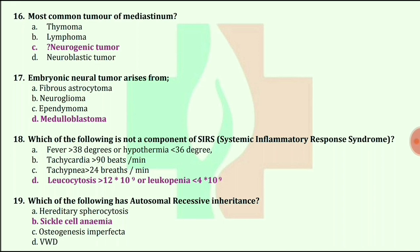Embryonic neural tumor arises from medulloblastoma. Which of the following is not a component of SIRS (systemic inflammatory response syndrome)? Answer is leukocytosis more than 20 × 10⁹ or leukopenia.